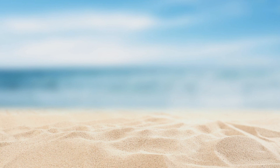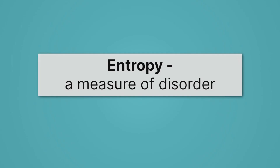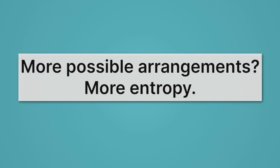That's what the second law of thermodynamics is saying. We go from states that are highly ordered, like this castle, to states that are disordered, like this sand. Now, entropy is just a measure of disorder. The question you want to ask is: how many arrangements do we have? If there are more possible arrangements, we have more entropy.